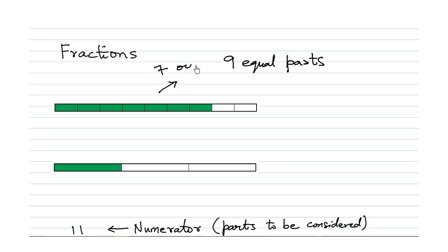So over here, one, two, three, four, five, six, seven. So you are giving seven parts out of nine equal parts to your friend let's say. So you are giving him or her seven out of nine equal parts of that chocolate bar.